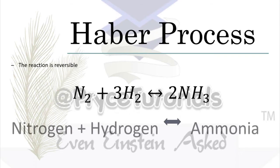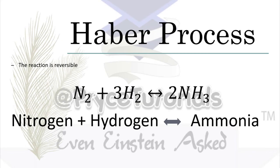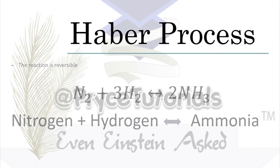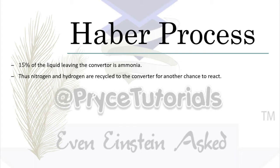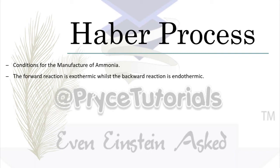Take note that the reaction is reversible. We mix nitrogen and hydrogen to get ammonia, but ammonia also breaks down into nitrogen and hydrogen in the backward reaction. About 15% of the gas leaving the converter is ammonia. The unreacted nitrogen and hydrogen are recycled back into the converter for another chance to react.